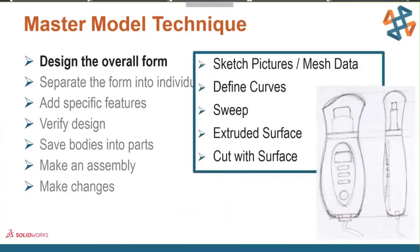The first step is to generate the overall form. It can start from scratch, from hand-drawn sketches, or from mesh data generated from a 3D scanned model. Today we'll begin our product design using hand-drawn sketches to generate the overall form — we'll define some curves, use those curves to build a solid model, and then create an extruded surface to remove unwanted material. Let's go ahead and jump into SOLIDWORKS.